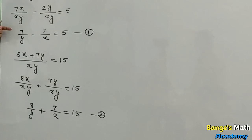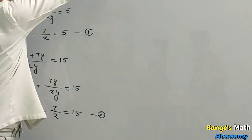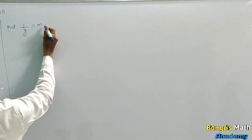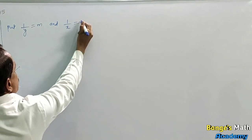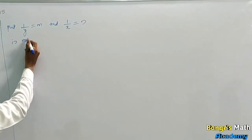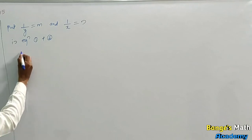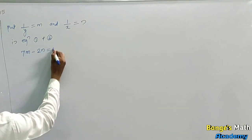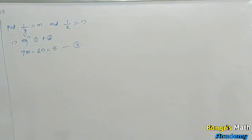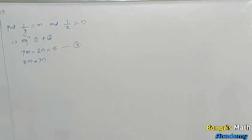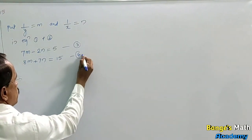Substitute 1 upon y equal to m and 1 upon x equal to n in equations 1 and 2. Then equation 1 becomes 7m minus 2n equal to 5 (equation 3), and equation 2 becomes 8m plus 7n equal to 15 (equation 4).